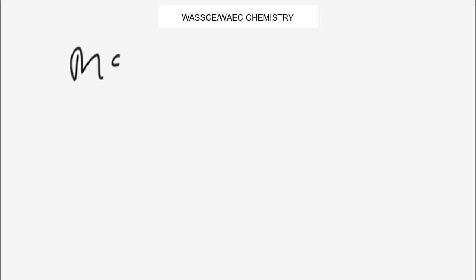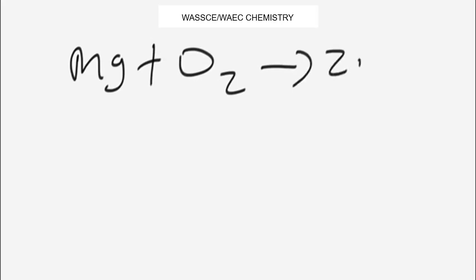Let's begin with a typical example. We are given magnesium reacting with an oxygen molecule, and we have to give two moles of magnesium oxide. We are asked to balance this chemical equation, so how do you go about this?